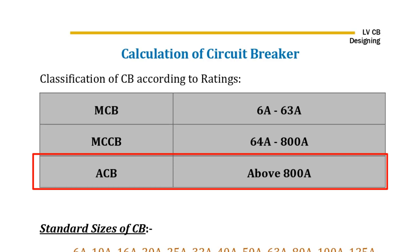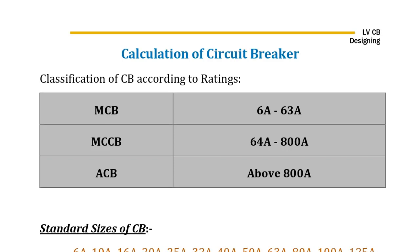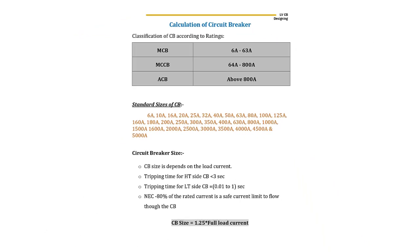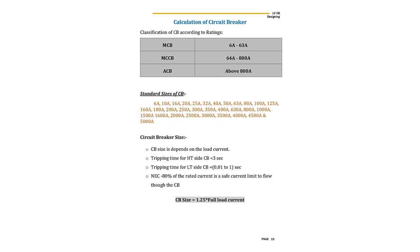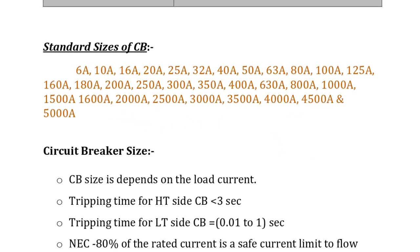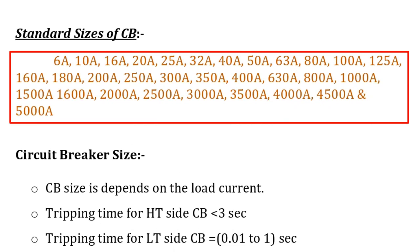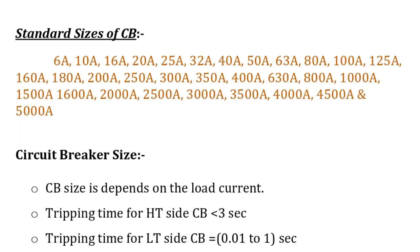Then go with an air blast circuit breaker. But the vacuum circuit breaker or SF6 circuit breakers are placed for the primary side of the distribution transformer — that is high tension or high voltage only. So this is the classification of circuit breakers with respect to ratings. These are the standard sizes with respect to circuit breakers which you will find in the market easily.